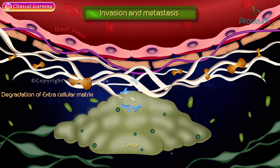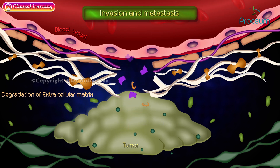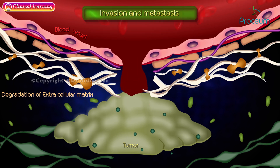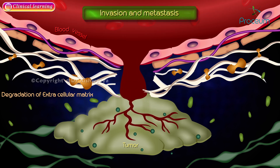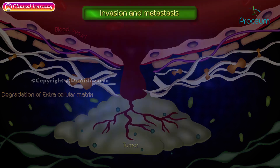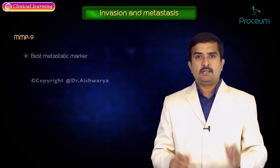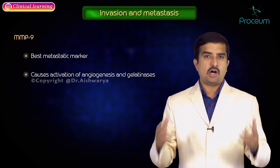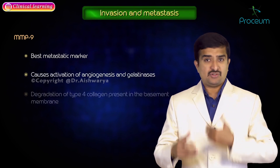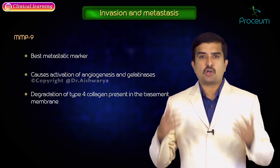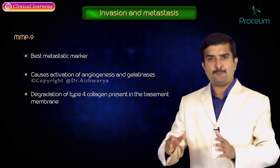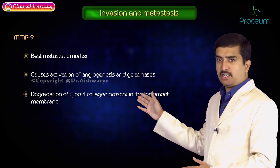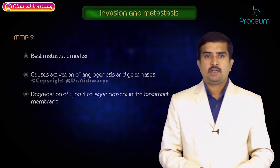Extracellular matrix degradation is mainly carried out by MMP2, MMP9, Cathepsin D, urokinase plasminogen activator, and other proteases. Out of these, MMP9 is the best metastatic marker, as it causes activation of angiogenesis. Gelatinases are responsible for degradation of type IV collagen, typically present in the basement membrane.